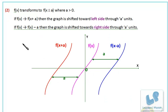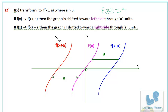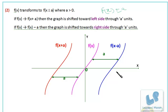Now we'll see the graph of f(x) when f(x) transforms to f(x ± a). The difference here is that a is added to x, not to the whole f(x). In the previous case the graph was moving upward and downward; in this case the graph will move left and right. If a is added to x, the graph shifts left; if a is deducted, the graph shifts right.